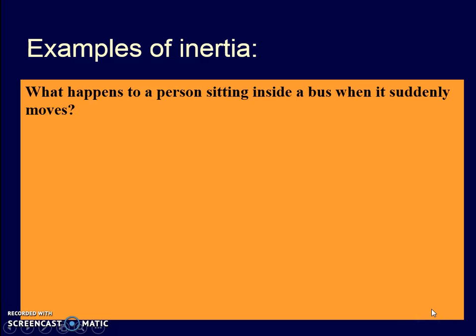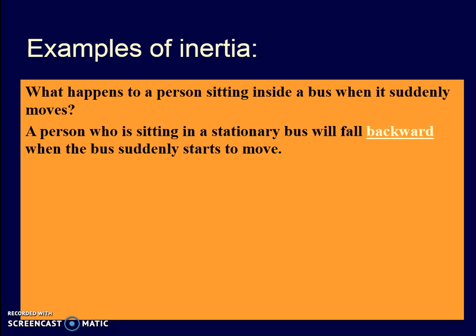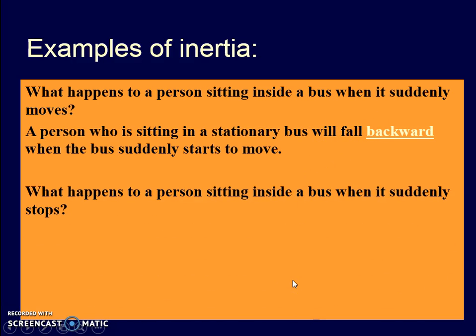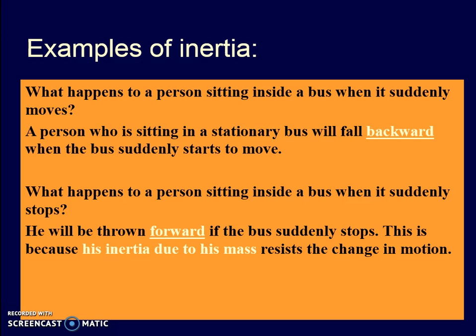Some other examples: if you are seated in a bus and it suddenly moves, your body will tend to fall backwards because of your unwillingness to change your original state of rest. On the other hand, if you are seated in a moving bus that suddenly stops, you are unwilling to change your state of motion, so your body will be thrown forward. This happens because of inertia due to the mass of your body.